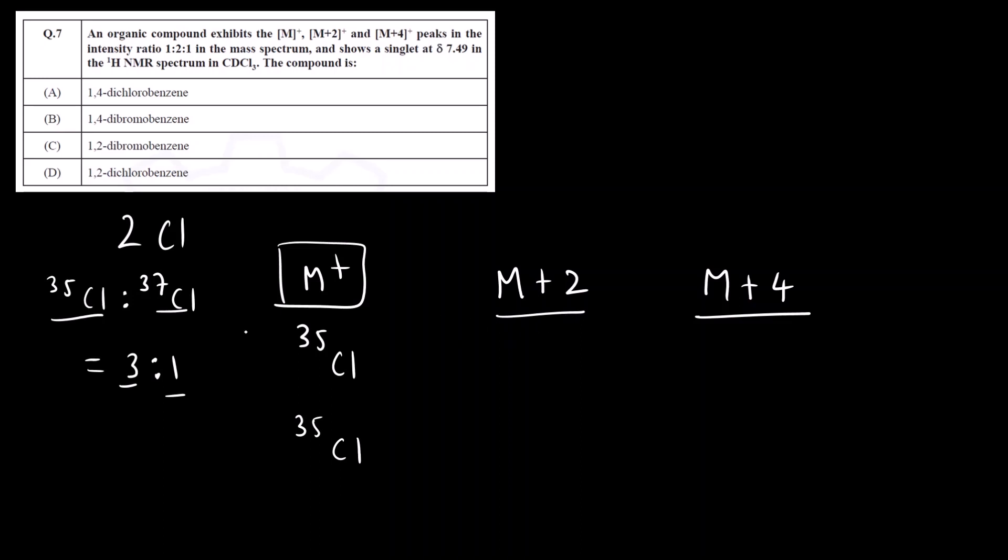Now M+2 means we will increase the mass of any one of the isotopes by two units. Suppose I increase this by two units and the second chlorine I will keep same. There is another possibility: first one I keep same and the second one I increase by two units. These are the two possibilities. And then for M+4 what I will do? I will increase the mass of both the isotopes. So both the chlorine I will take higher mass: 37Cl, 37Cl. Now we can find out the intensity ratio. 35Cl is 3, so 3 you have to multiply: 3×3. Line means you take ratio. Then 37Cl is 1, so 1×35Cl is 3 plus 35Cl is 3×37Cl is 1. Then line means again you do ratio. Here you have to remember we add - if there are more than one possibility we add them.